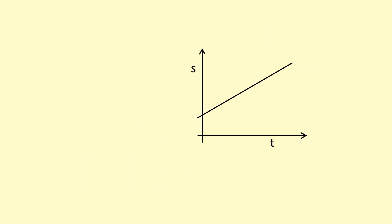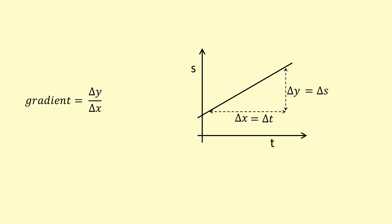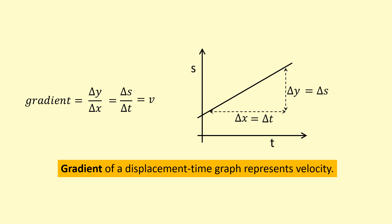The important thing to know about a displacement-time graph is the gradient — that's the most important feature. Gradient is change in y over change in x, and in this case we've got change in displacement divided by change in time. Change in displacement over change in time is the definition of velocity, which is the rate of change of displacement. So the gradient represents the velocity of the object — that's very important to keep in mind when interpreting displacement-time graphs.